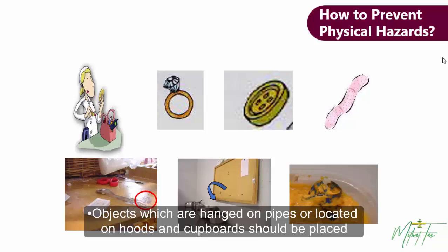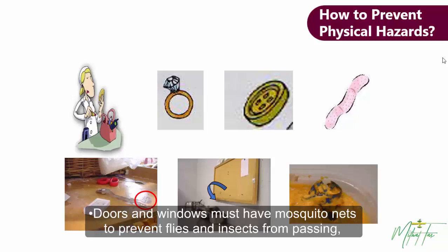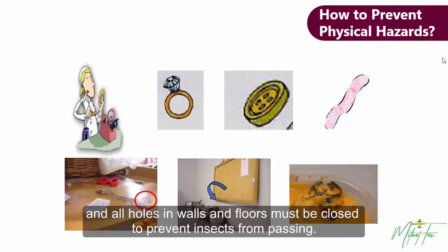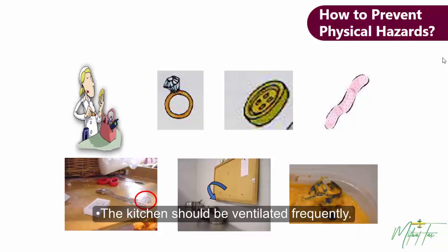Objects which are hung on pipes or located on hoods and cupboards should be placed in a way that they don't fall down. If necessary, they should be removed from these places. Doors and windows must have mosquito nets to prevent flies and insects from passing, and all holes in walls and floors must be closed to prevent insects from passing. Hoods cleaning should be done at regular intervals; oil and dust accumulation shouldn't be allowed. The kitchen should be ventilated frequently.